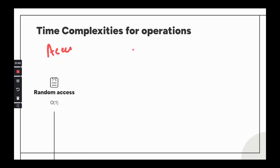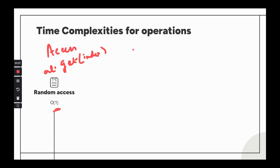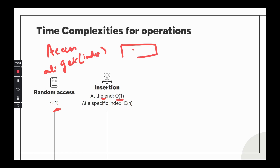Time complexities: random access — calling list.get(index) — takes constant time O(1) because ArrayList is backed by an array with contiguous memory locations. For insertion at the beginning or end, it is also constant time O(1) since no shifting is needed. However, insertion at a specific index in the middle requires shifting elements to make space, so that takes O(n) linear time.